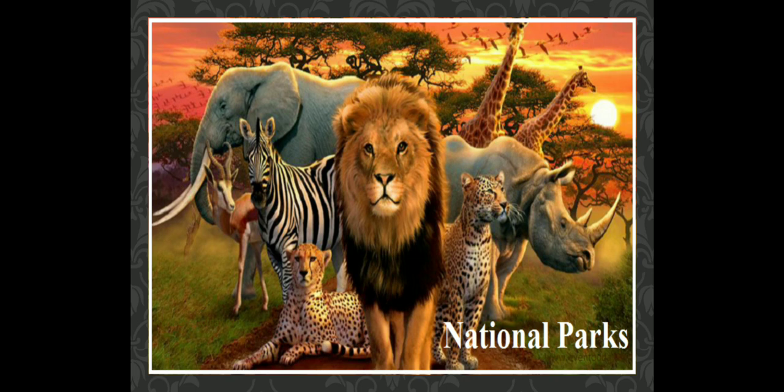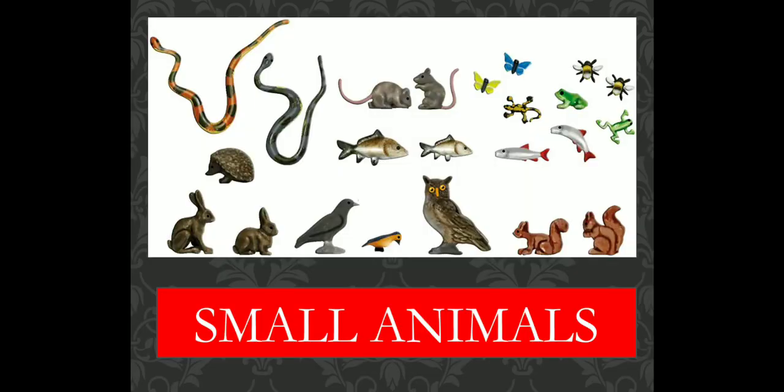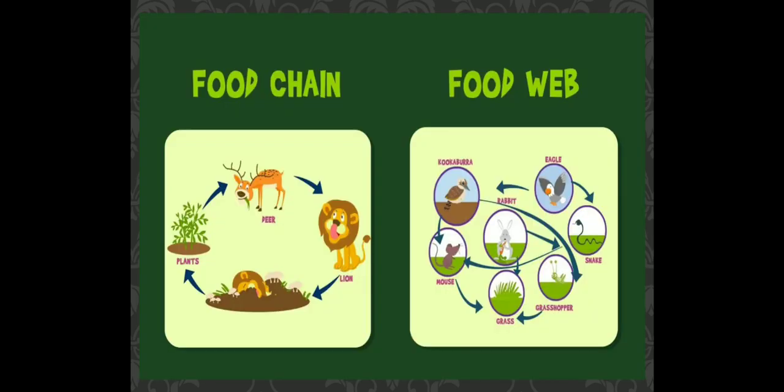Is it only the big animals that are facing these problems? No, not only the big animals — small creatures and small animals are also in danger of becoming extinct, perhaps even more so than the bigger animals. Animals such as snakes, frogs, lizards, bats, and owls are getting killed without people realizing their importance.